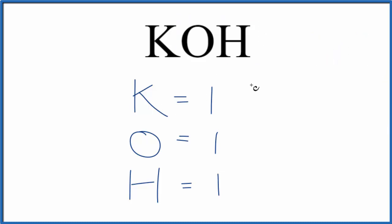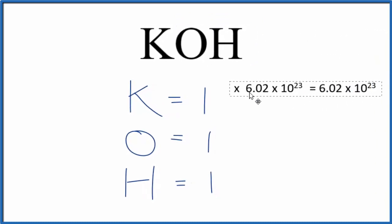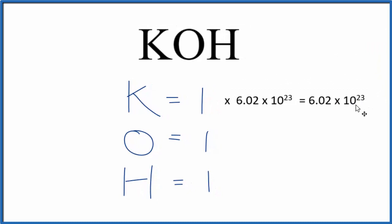So to figure that out, we'll take the number of atoms and then multiply that by Avogadro's number. So we have one potassium atom times Avogadro's number, that gives us 6.02 times 10 to the 23rd, Avogadro's number.